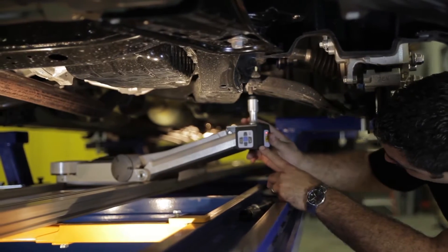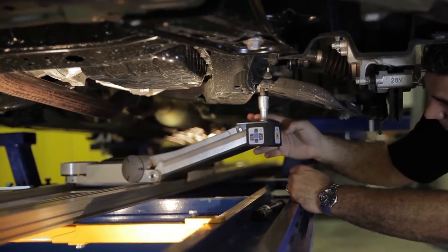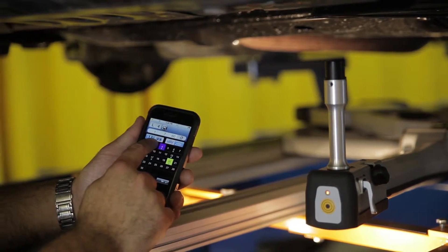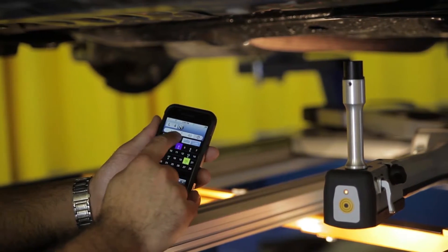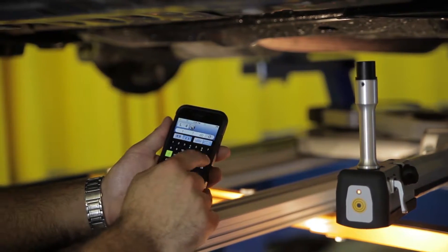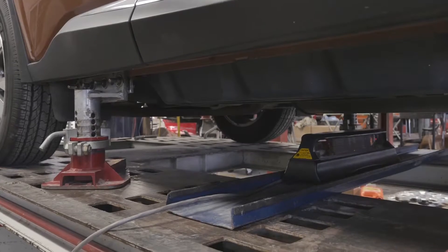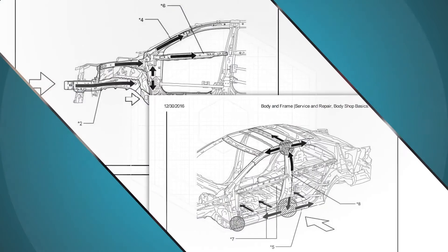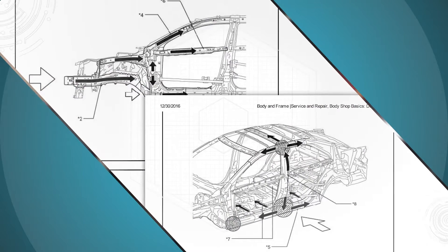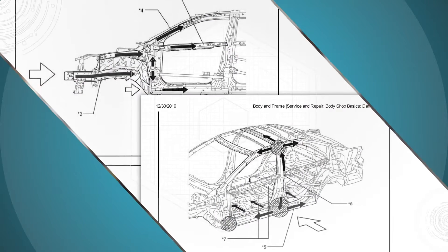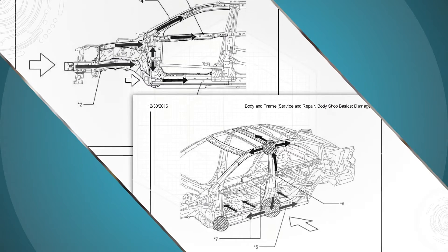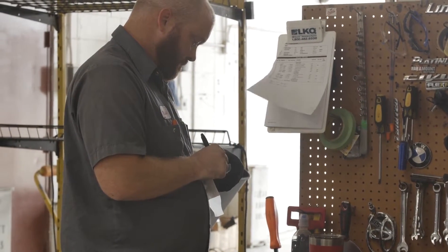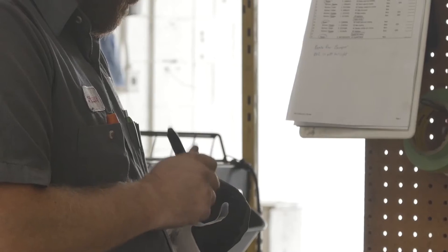Once the reference points are obtained, you may now begin to measure the damaged area. Be sure to select as many points as your system will allow and follow components back to your reference points. This will ensure that you have measured all possible areas in which the energy from the collision could have followed along the load path, damaging or misaligning the components. Once the measurement is complete, a report can be generated and placed with the work order for reference.